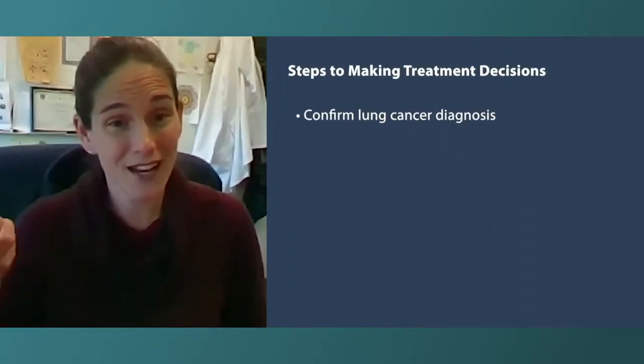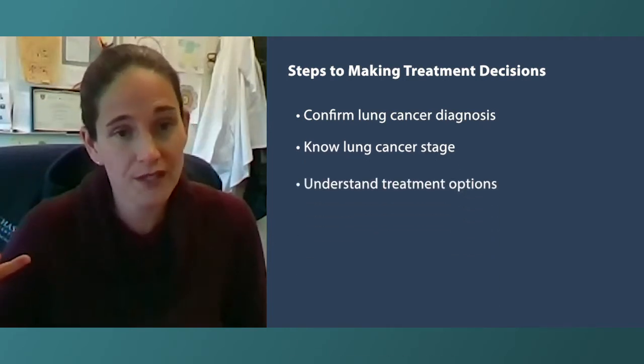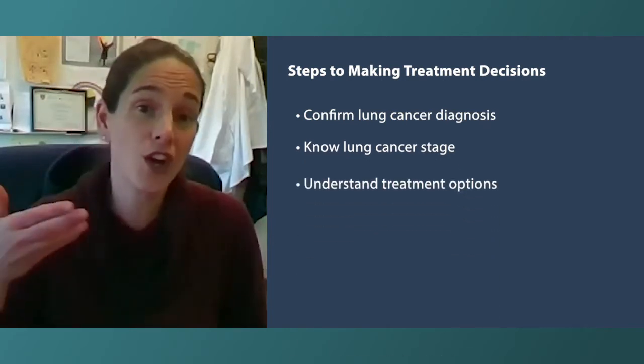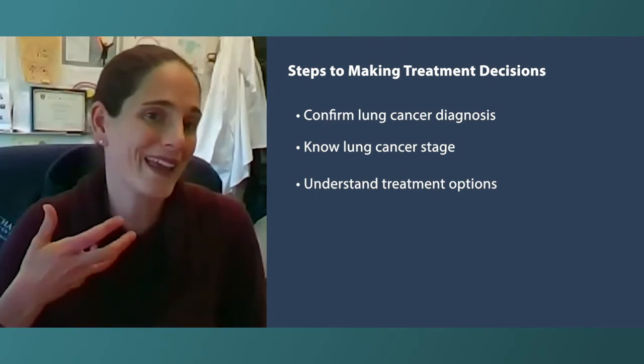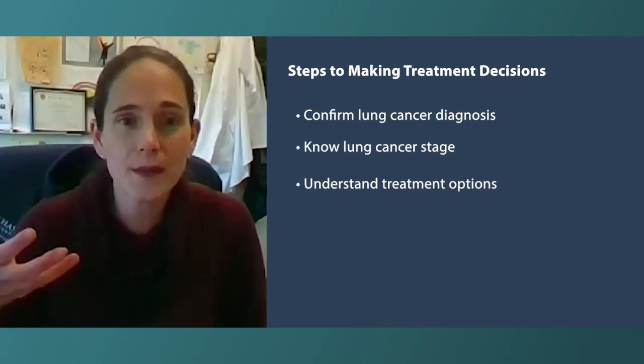How can patients advocate for a precise lung cancer diagnosis, and why is that important? It's important because it changes everything in terms of what they would be able to be offered in terms of treatment. I think it's important to really understand what your lung cancer is — what is the stage, what are the treatment options, and if there are options that aren't available to you, why is that?